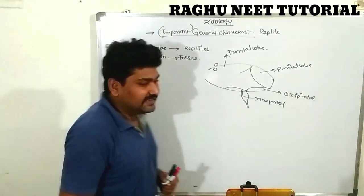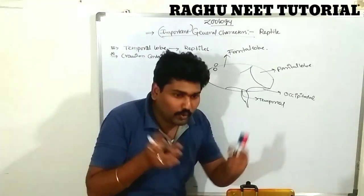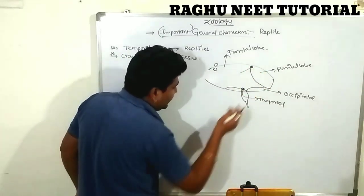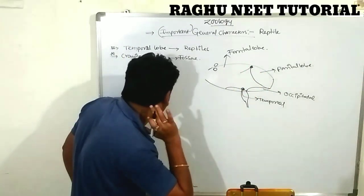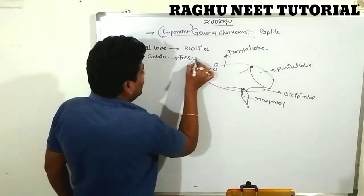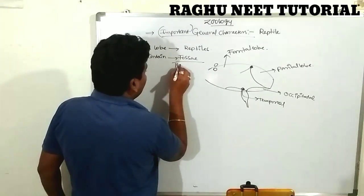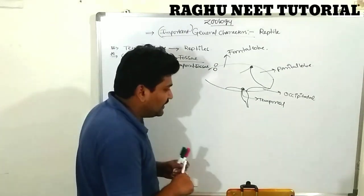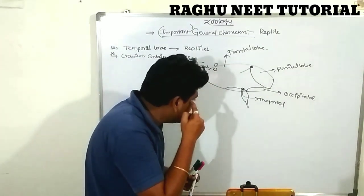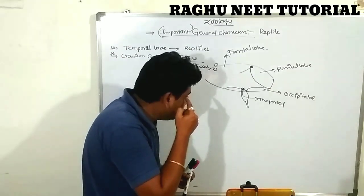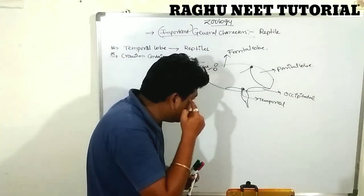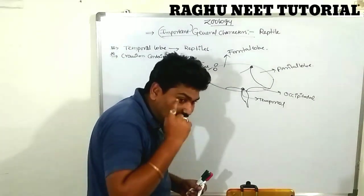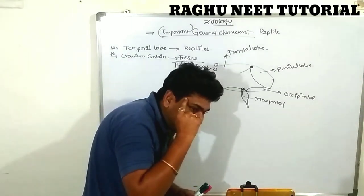The fossae are located in the temporal region, so they are called temporal fossae. On either side of the temporal region, these temporal fossae are present. The temporal fossae are located above the eye — touching the outer surface of the eye region — and this is one of the special characters of reptiles.